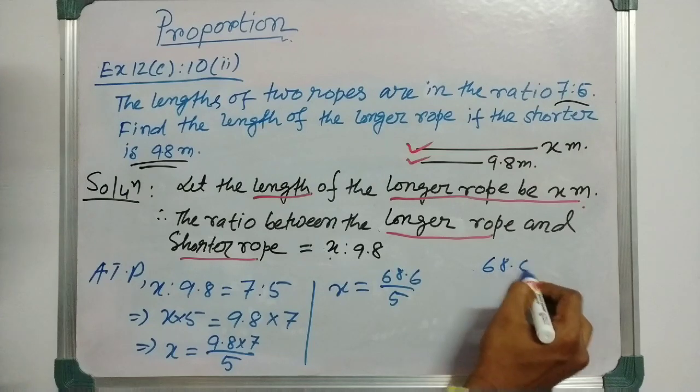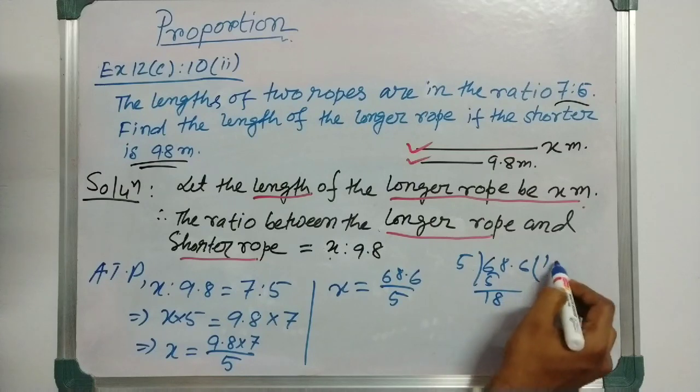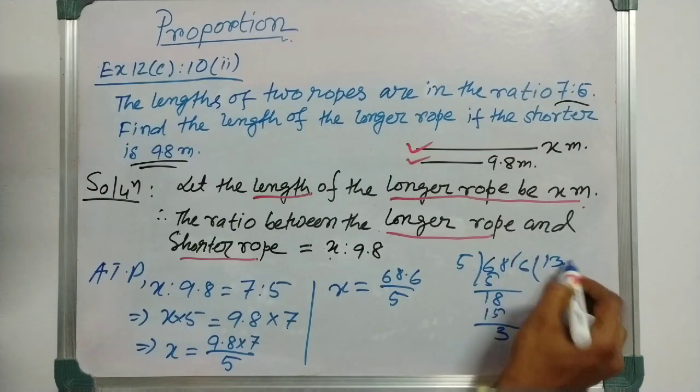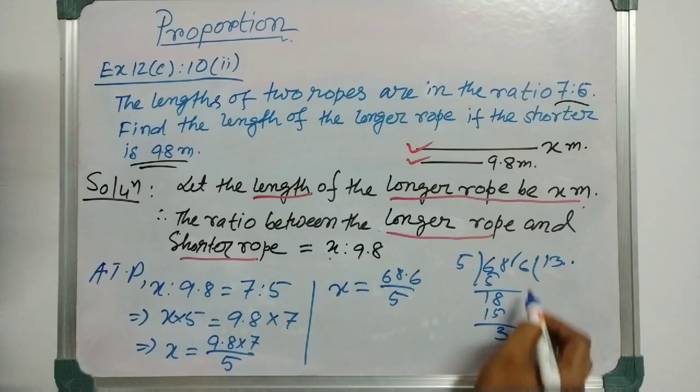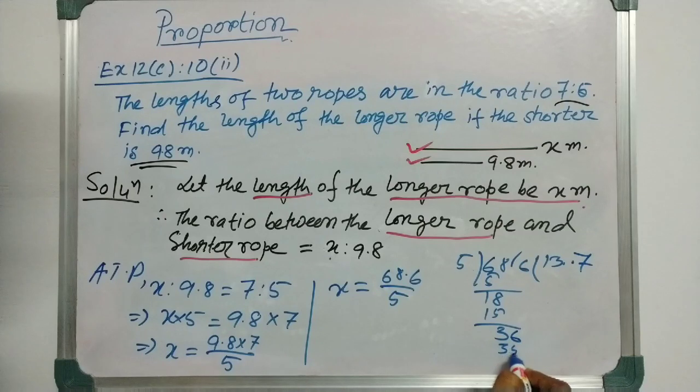Let us divide 68.6 divided by 5. So, 5 into 13 is 65, remainder 3. This is 36, 5 into 7 is 35, remainder 1. Point will come over here. 5 into 1 is 5, remainder 1. This is 16, 5 into 3 is 15, remainder 1. So, 13.72.